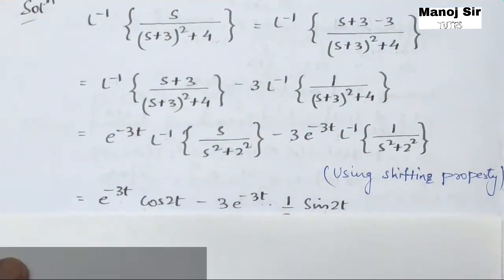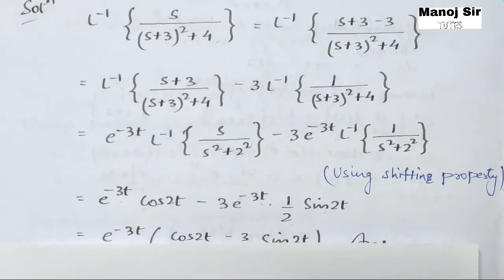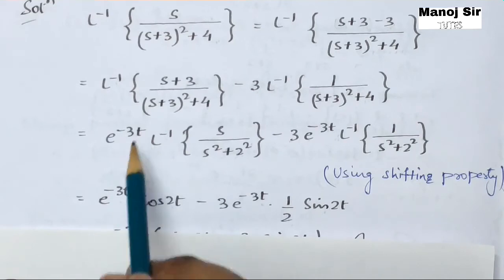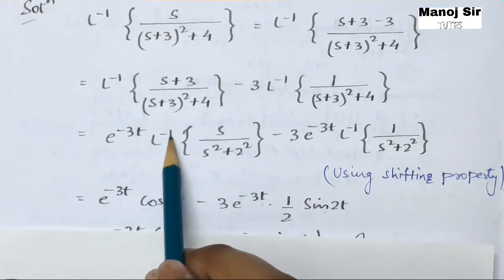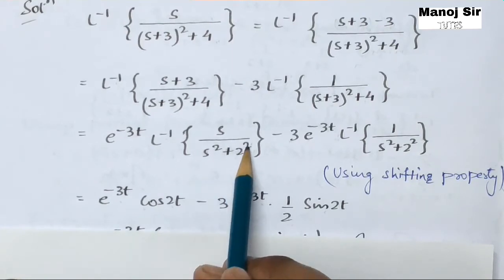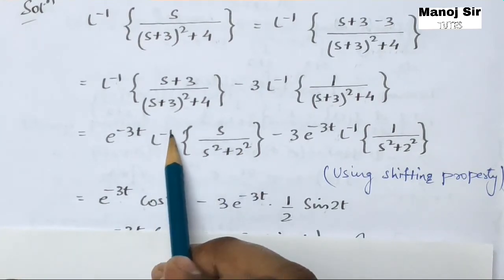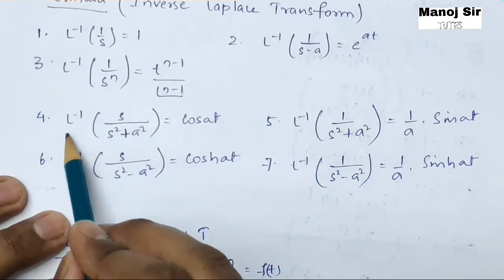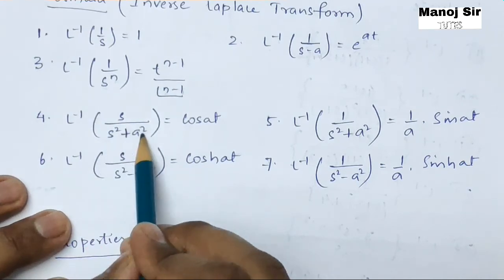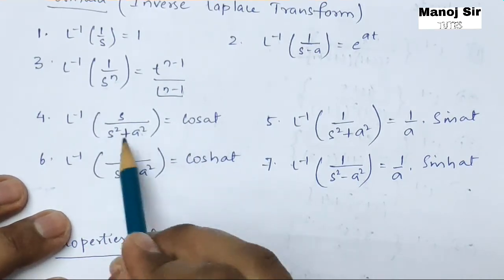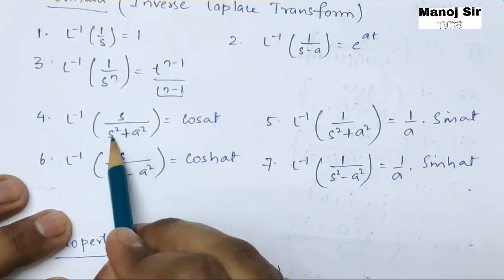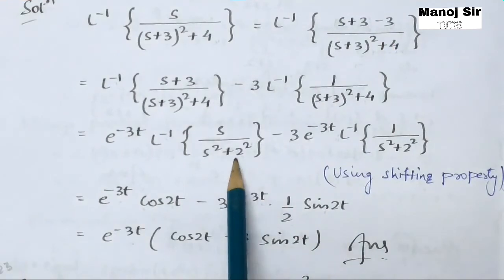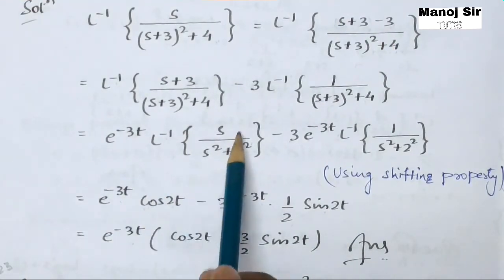Now we apply Formula 4: inverse Laplace transform of s/(s² + a²) equals cos(at). The value of a is 2, so the first term becomes e^(−3t) · cos(2t).